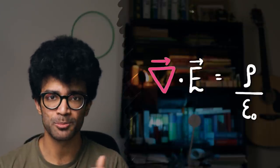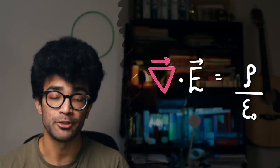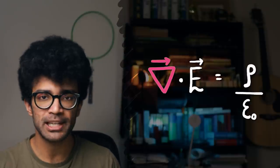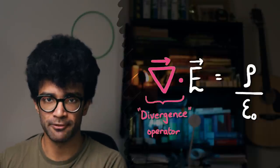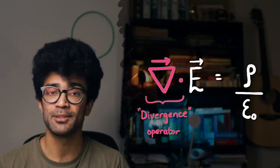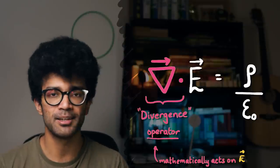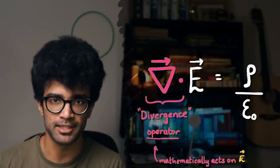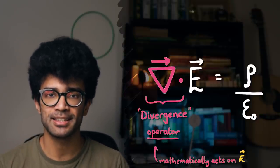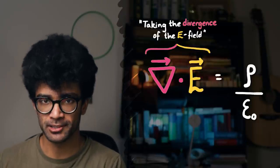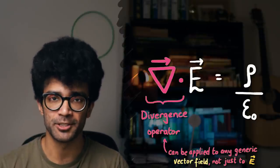Next, we look at what the downward-pointing triangle is. When paired with the dot between the triangle and the E, this is known as an operator called divergence. It does something mathematically to our electric field representation. Reading the left-hand side, we say this is 'taking the divergence of the electric field E.' The divergence operator can be applied to any generic vector field, not just the electric field.